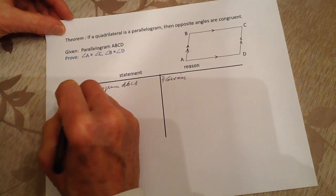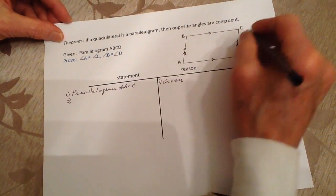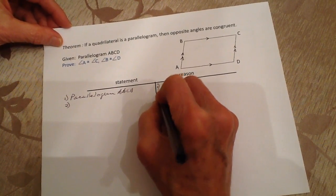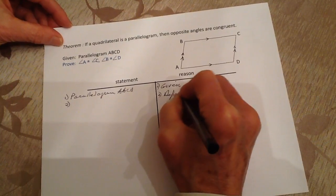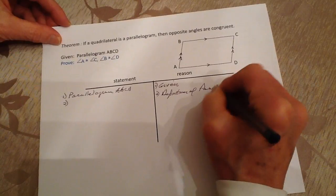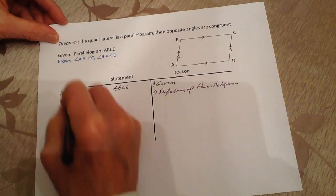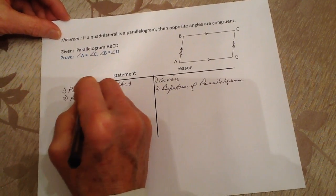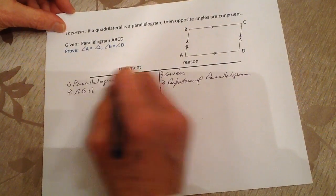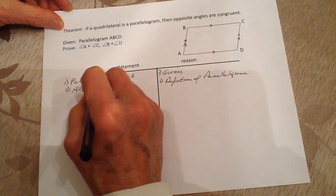Number two: we know that these opposite sides are going to be parallel. That's part of the definition of a parallelogram. We know that AB is parallel to DC.